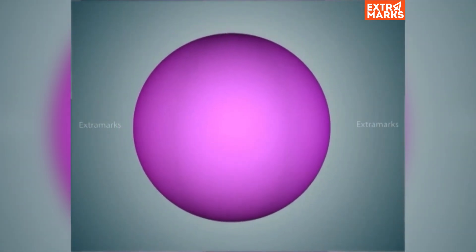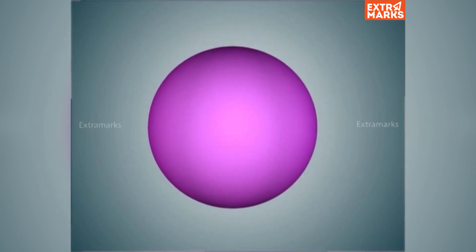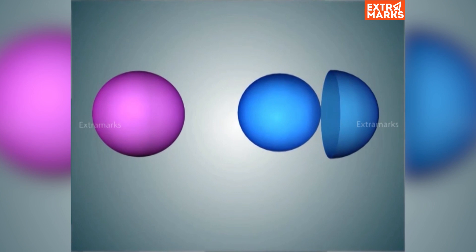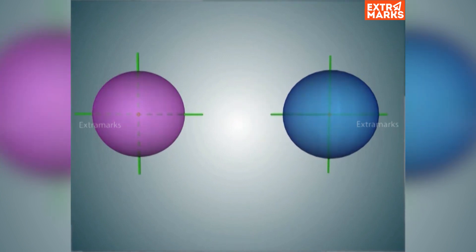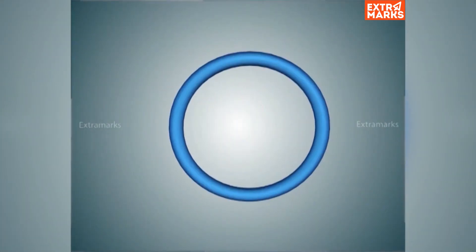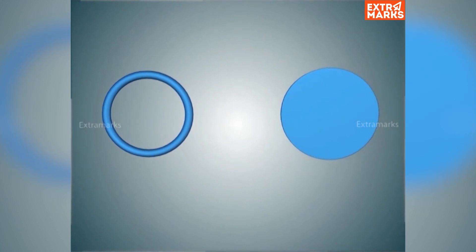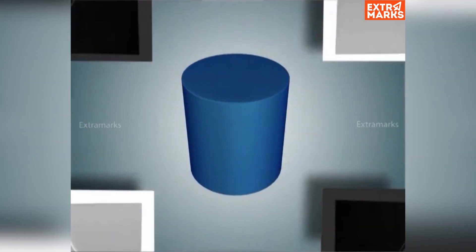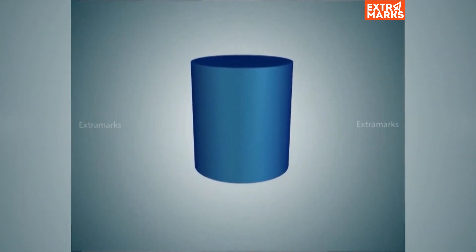The center of mass of any symmetrical object lies at its geometrical center. For a uniform hollow or solid sphere, the center of mass lies at the center of the sphere. The center of mass of a uniform circular disc or ring lies at the center. For a solid cylinder, the center of mass lies at the center of its axis.